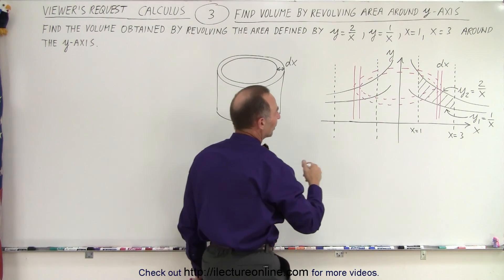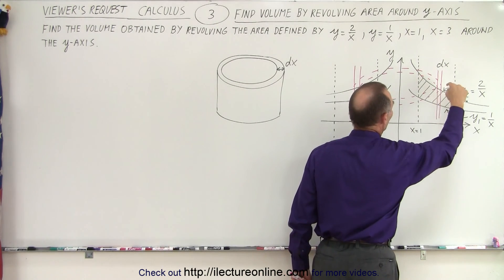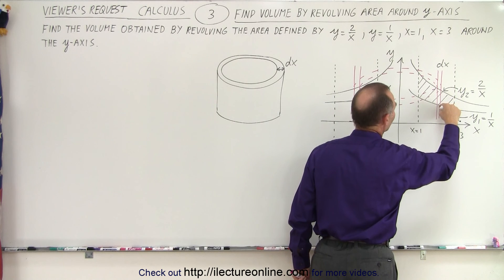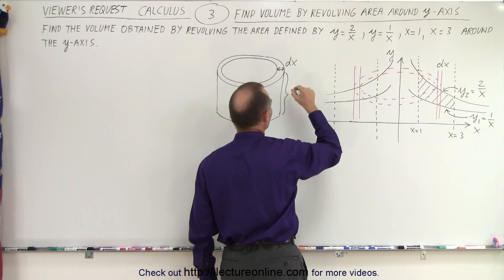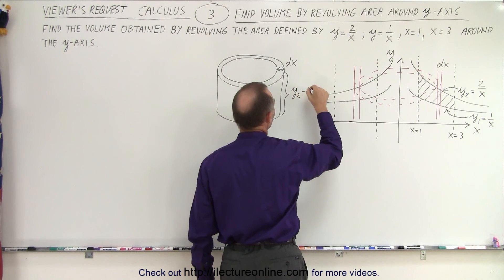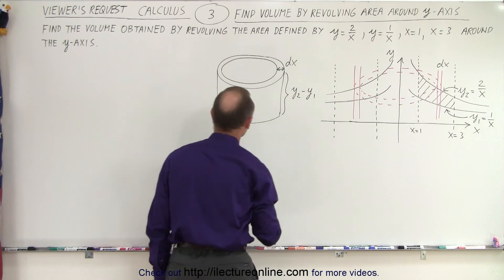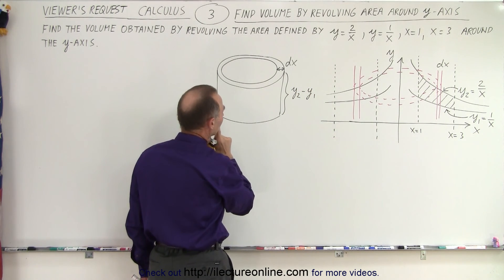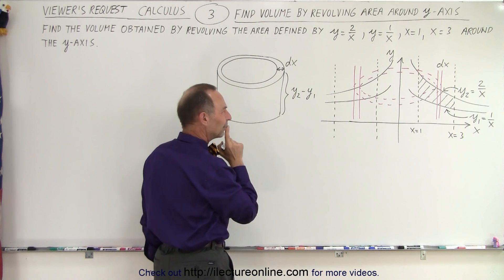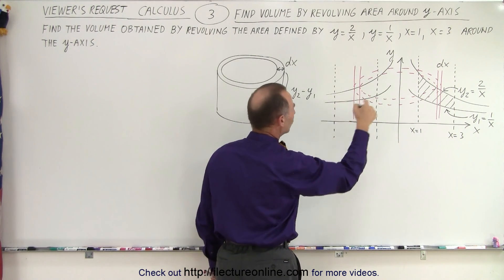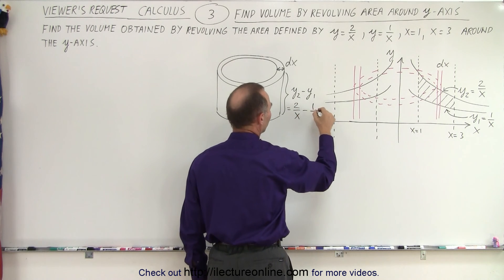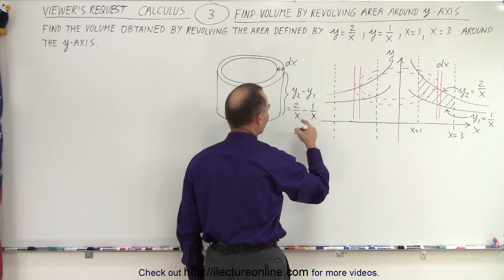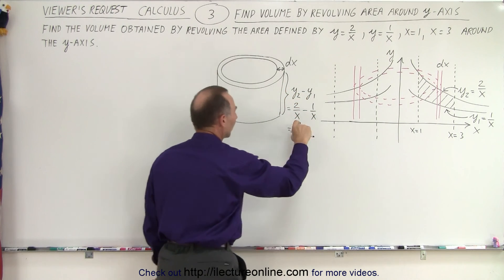What about the height? The height starts from y2 and goes down to y1. So the height here of the hollow cylinder is y2 minus y1. And how else can we define that? We know that y2 is equal to 2 over x, so that's equal to 2 over x, minus y1 is 1 over x. 2 over x minus 1 over x is equal to 1 over x. So we can define the height as 1 over x.